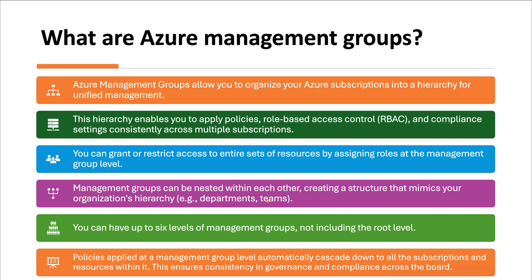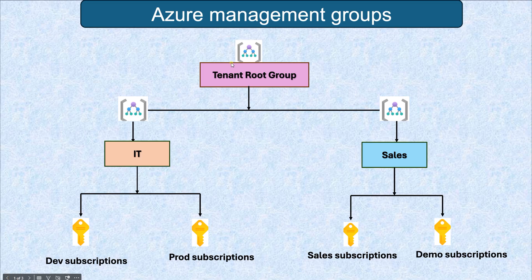You can have up to six levels of management groups, not including the root level — so after the Tenant Root Group, you can still create six additional levels of management groups. Policies applied at the management group level automatically cascade down to all subscriptions and resources within it, ensuring consistency in governance and compliance. For example, a user assigned to the IT Department management group will have access to Dev and Prod subscriptions but not to Sales or Demo.